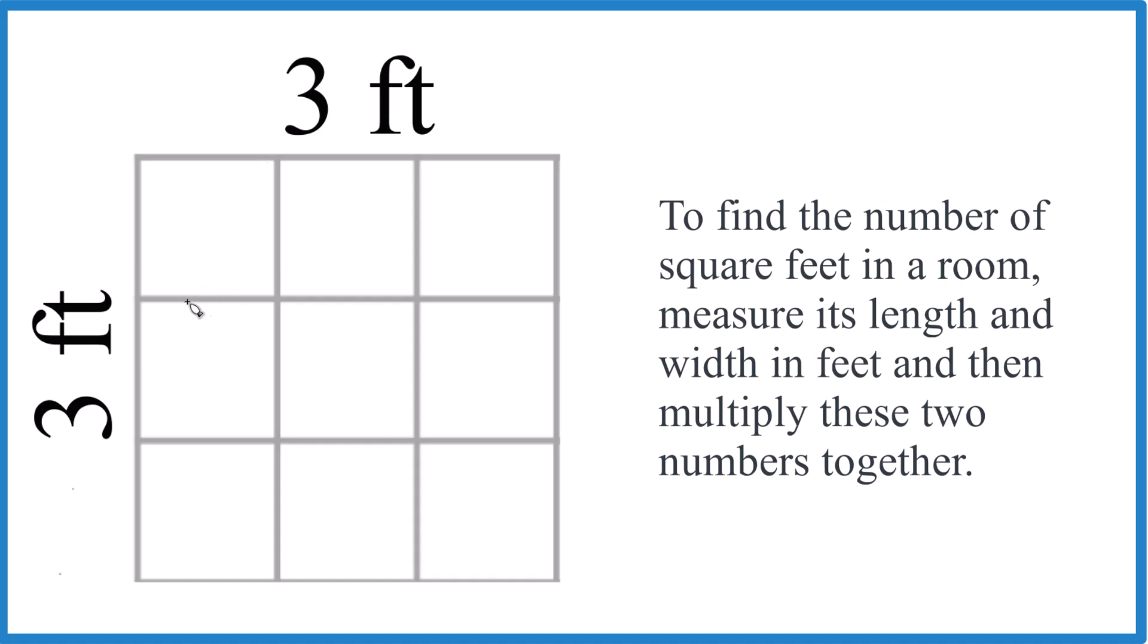Really all you're doing is you're taking three feet times three feet. Three times three, that equals nine. And feet times feet would be feet squared. We're going to call it square feet.